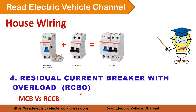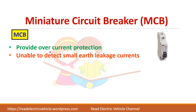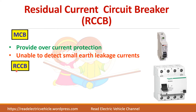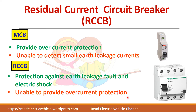In this video, let us see about the RCBO, which is also called a residual current breaker with overload, and we will see the difference between an MCB and RCCB. The MCB is mainly used to provide overcurrent protection, but its main drawback is that it is unable to detect even small leakage current. So we need another device that can detect small earth leakage current. That function is performed by the RCCB, which can detect earth leakage current and protect us from electrical shock, but the disadvantage of RCCB is that it cannot provide overcurrent protection.